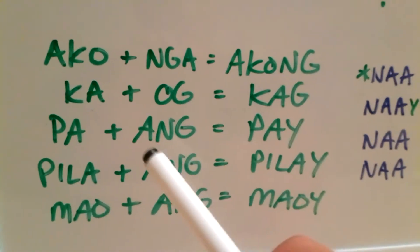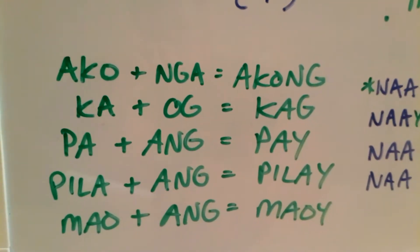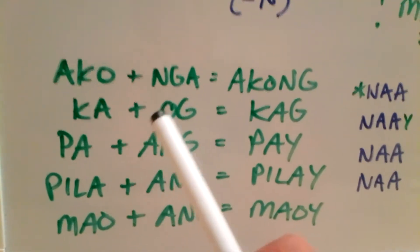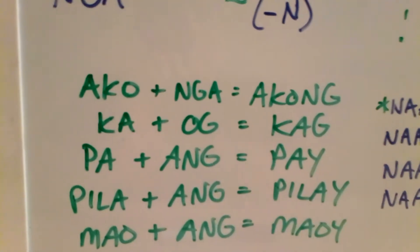Ka and og. Ka, og, kag. You'll probably see this one often too. Ka and og. Why?